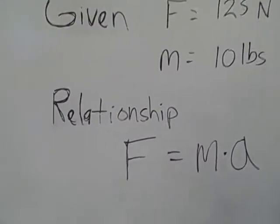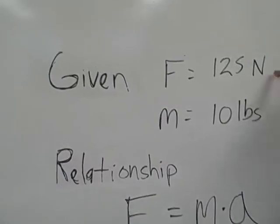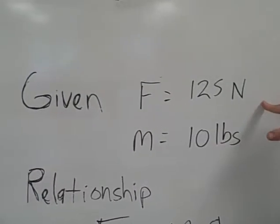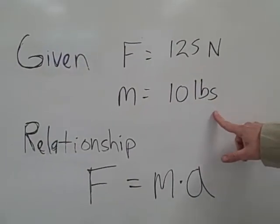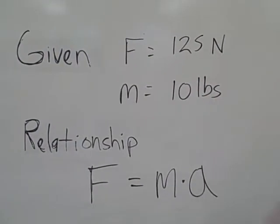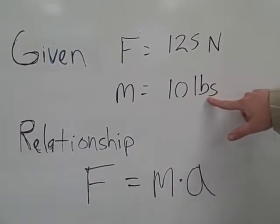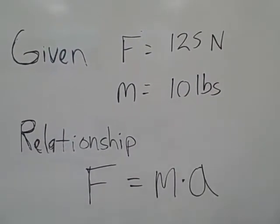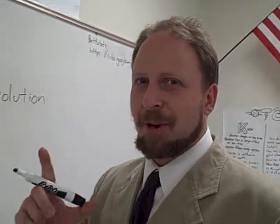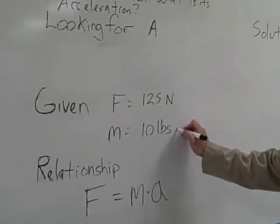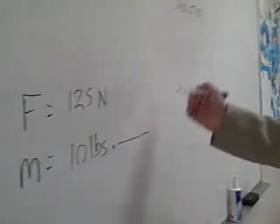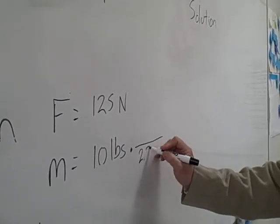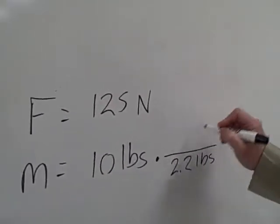There's going to be a problem here. Newtons are expressed in kilograms, meters, and seconds — no pounds anywhere in sight, because pounds are not actually mass. So we're going to have to change it up. We're going to do a little dimensional analysis — know it and love it. I'm going to convert. I happen to know that there are 2.2 pounds in 1 kilogram.